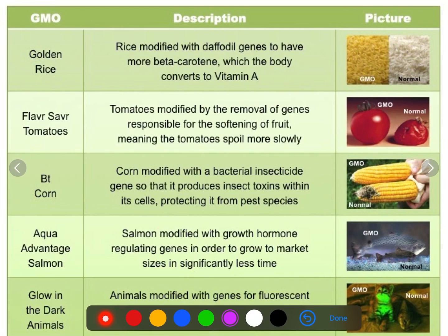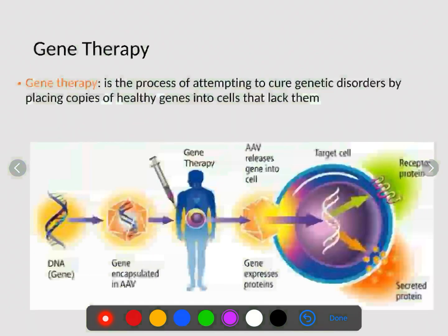Some very common genetically modified organisms include golden rice, which was modified with a daffodil gene to have more beta carotene, allowing our body to convert it to vitamin A. Genetically modified tomatoes were modified by removing the gene responsible for softening of the fruit, meaning they last longer. BT corn was modified with bacterial insecticide genes so that it produces insect toxins within its cells. We can also do it to salmon — we made them bigger. And sometimes it's done just for fun, like glowing-in-the-dark animals, which has no beneficial value but shows it can be done.